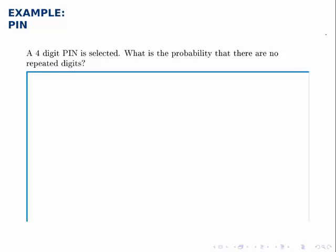If you select a four digit PIN, what is the probability that there are no repeated digits? Let's start by counting the number of ways that anything could happen, the number of total possibilities for what PIN you could select.